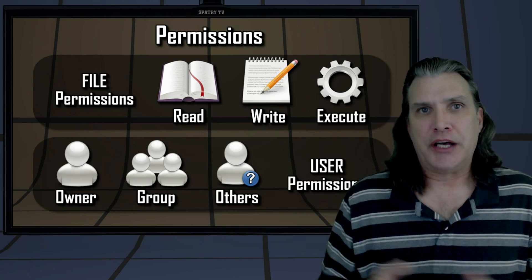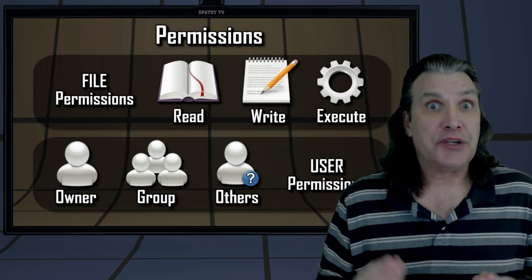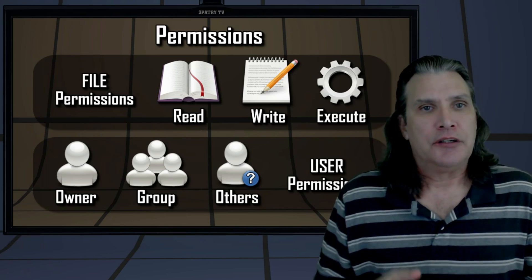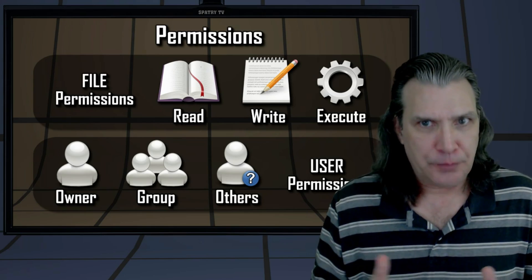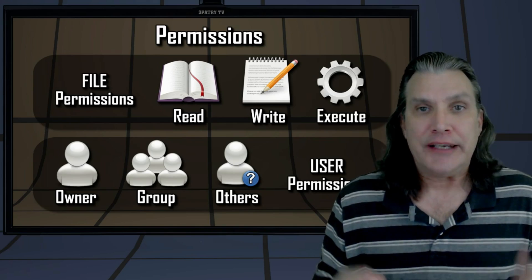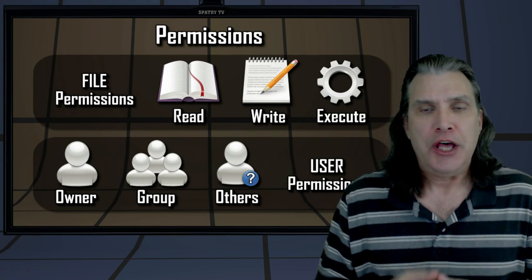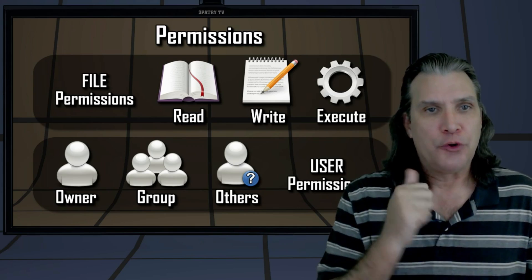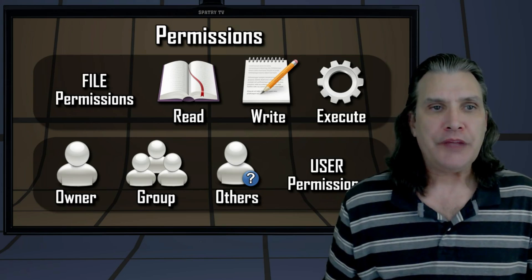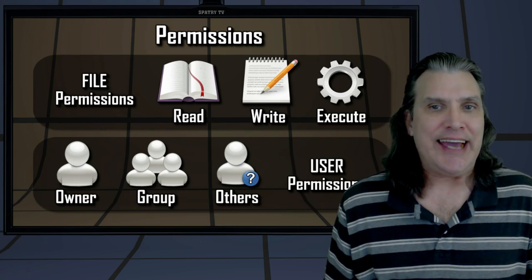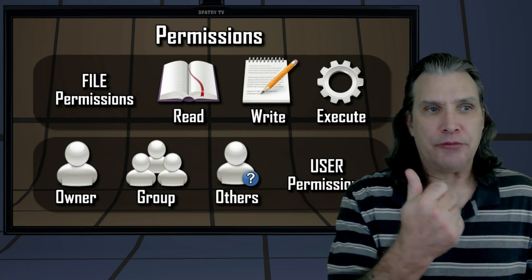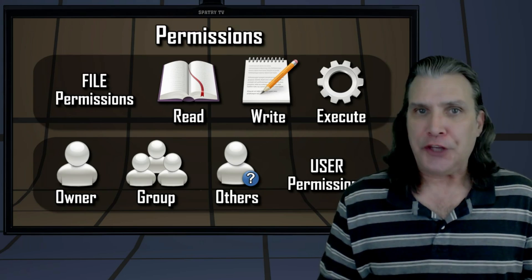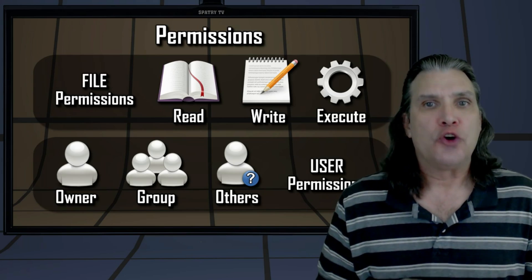Now that we know where all of our files reside on the file system, let's explore file permissions — something really cool about Linux. Each file on your computer belongs to one of the users; that is, each file has an owner. Additionally, a file can be assigned to a group of users, but the owner must be a member of that group. Each file has three kinds of permissions: read, write, and execute. These permissions can be assigned to three kinds of owner relations: owner, group, and others — where others includes all users who are not the owner and do not belong to the group which owns the file.